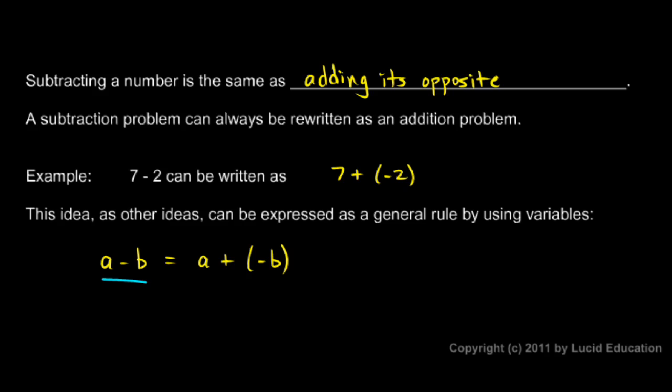a minus b is equal to a plus negative b. And in fact, this is the definition of subtraction. This is how mathematicians define subtraction. Subtracting a number is the same thing as adding the opposite of that number.